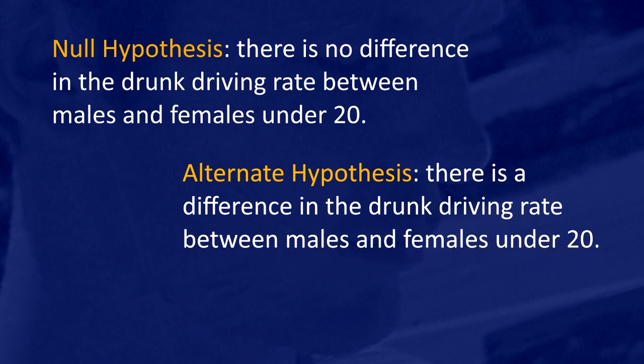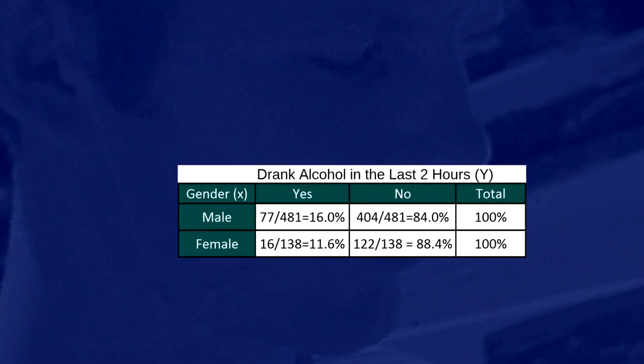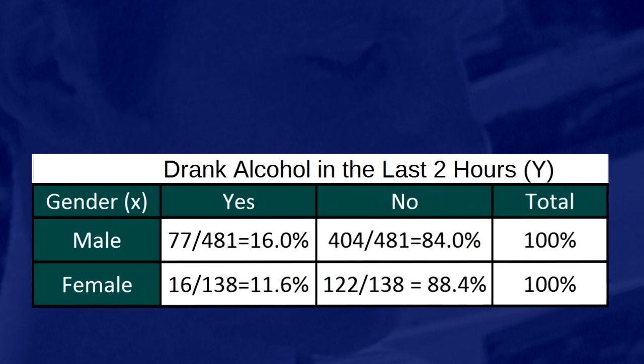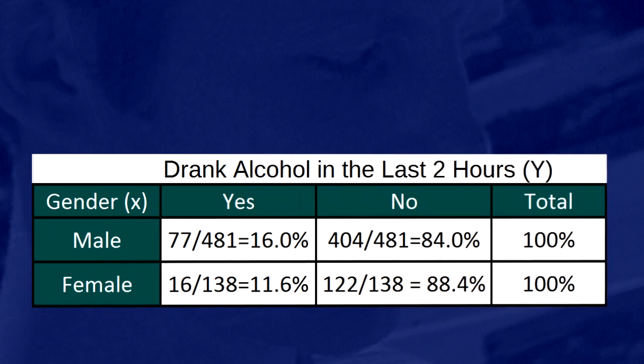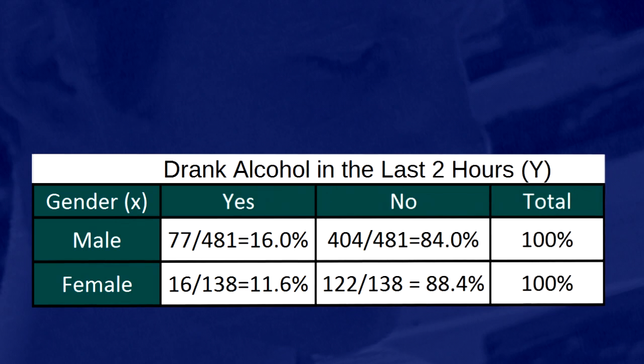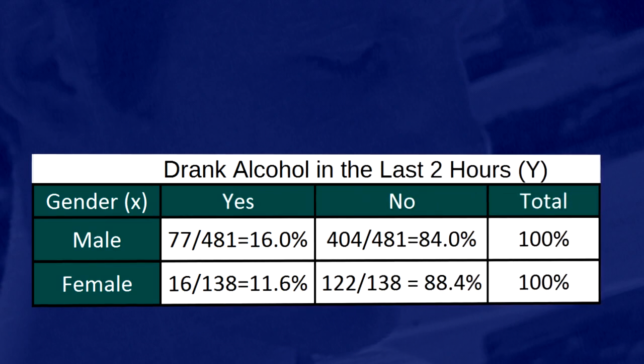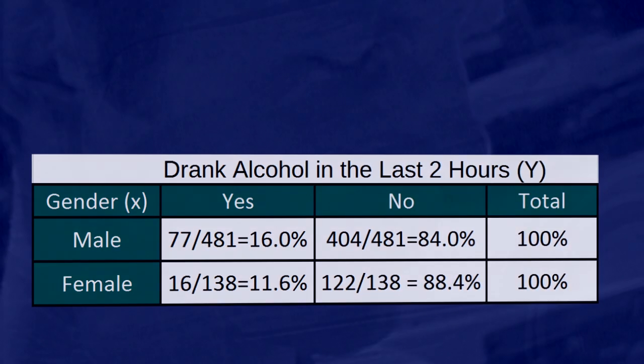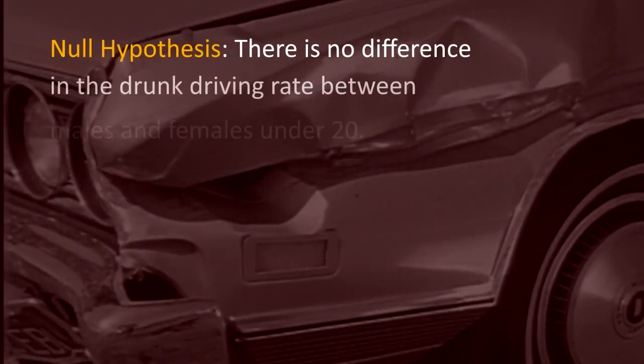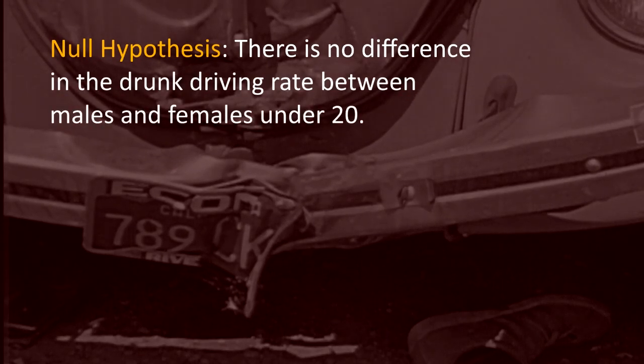In other words, is the evidence provided by the roadside survey, 16% versus 11.6%, strong enough to conclude beyond a reasonable doubt that it must be due to a relationship between drunk driving and gender in the population of drivers under 20? Or is the evidence provided by the roadside survey not strong enough to make that conclusion? And could this have happened just by chance, that is, due to sampling variability and not necessarily because a relationship exists in the population?